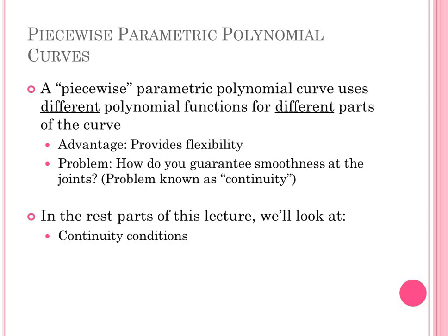The spline curves in computer graphics are created piecewise. The first piece is created from the first control point to the second control point, then another piece from the second to the third control point, and so on. When all pieces are created from first to last control point, they are merged together to get a complete, whole spline curve. A piecewise parametric polynomial curve uses different polynomial functions for different parts of the curve, which are then joined together.